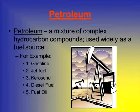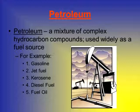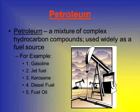The first fossil fuel we're going to talk about is petroleum, which is a mixture of complex hydrocarbon compounds — hydrocarbon meaning they have hydrogen and carbon as part of their molecules. This is one of the most widely used fuel sources, used for everything from gasoline to jet fuel, kerosene, diesel fuel, and fuel oil. Petroleum is where the gasoline for your car comes from.